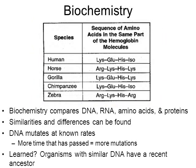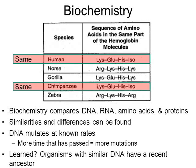Organisms with similar DNA have a more recent ancestor. This table shows the amino acids that make up only a very small portion of the hemoglobin protein. Hemoglobin is a protein made from a collection of amino acids. When you look at this table, you can see that the human and chimpanzee portion of this hemoglobin protein are identical. So when we look at biochemistry, we can get an idea of which organisms have a more recent common ancestor.